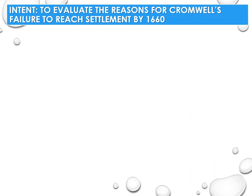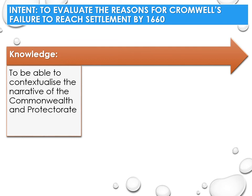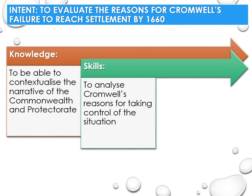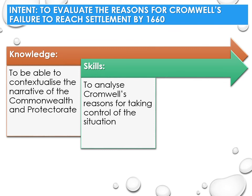In this lecture, we have reviewed the attempts to reach a constitutional settlement by 1660 and why each attempt failed. In doing so, we have, knowledge-wise, contextualised the narrative of the Commonwealth and Protectorate, and you need to complete the associated material to consolidate this. Skills-wise, analyse the reasons why Cromwell's attempts to take control of the situation failed, so that you can now behaviourally evaluate the reasons behind the attempts' failures. Please complete the associated material to ensure you meet these aims.